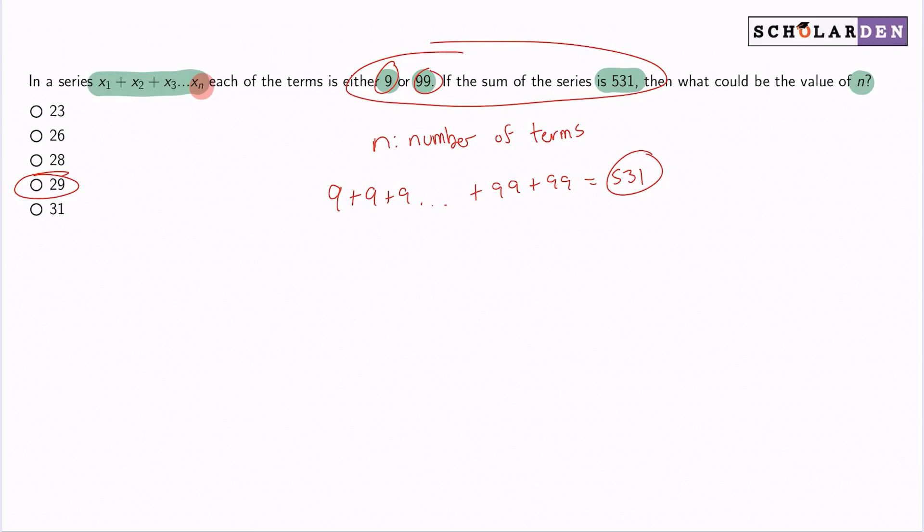So with that said, I can divide 531 by 9. And if I do that, what will I receive? What I receive is 59. So this means that 59 nines go into 531.